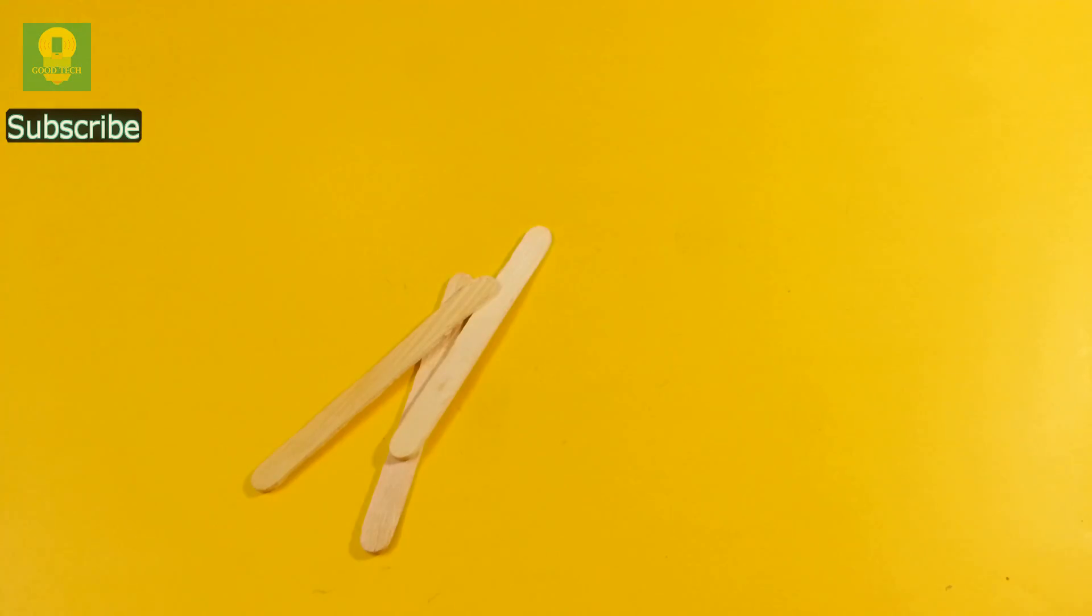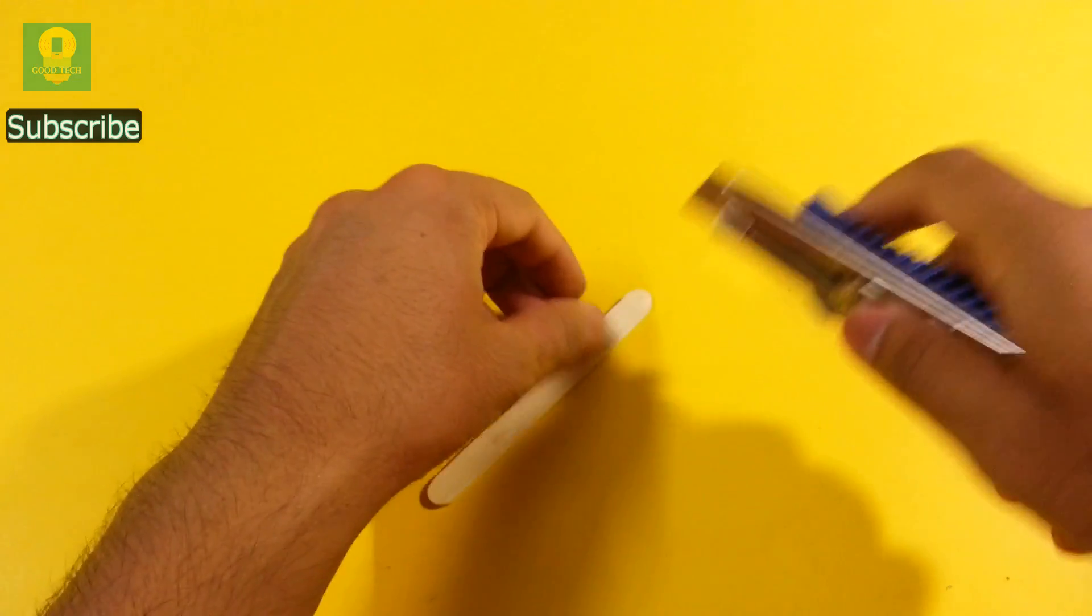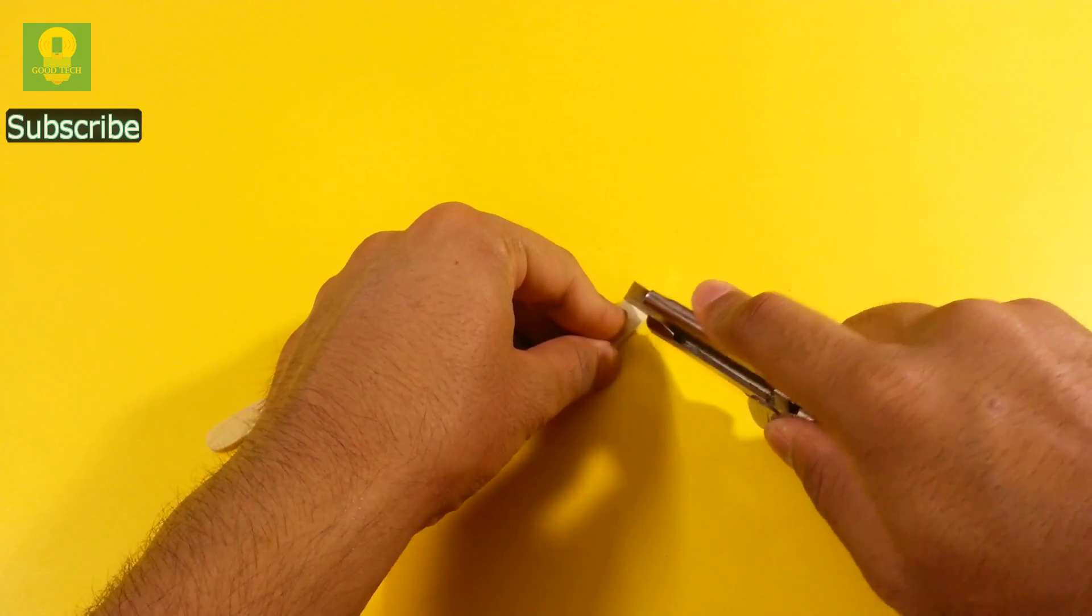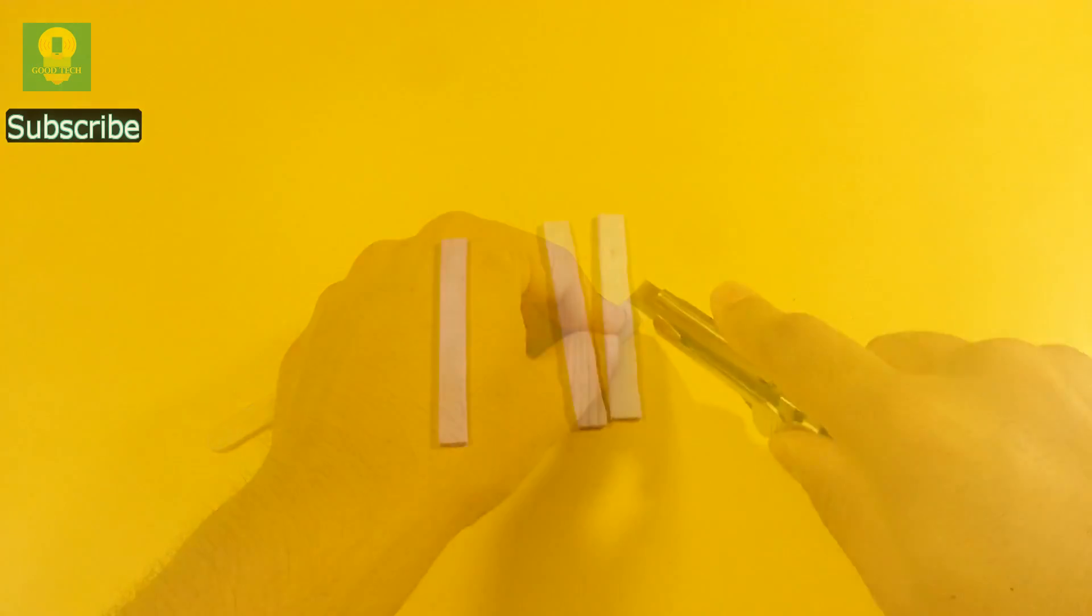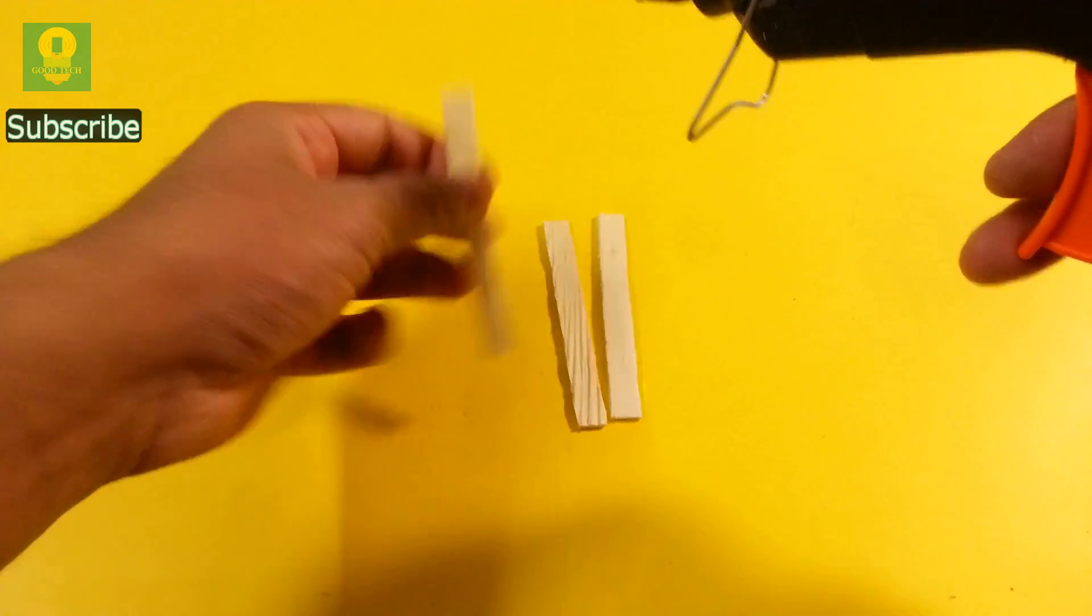To start, take few ice cream sticks. Using a knife, cut all the curved edges. Using hot glue, stick them together to make a base.